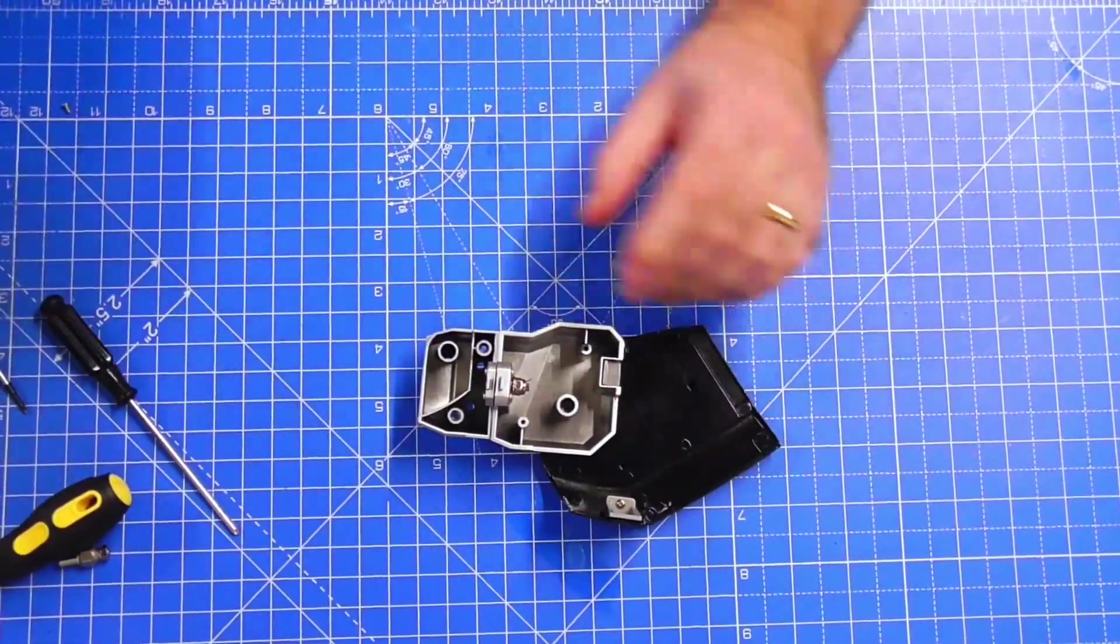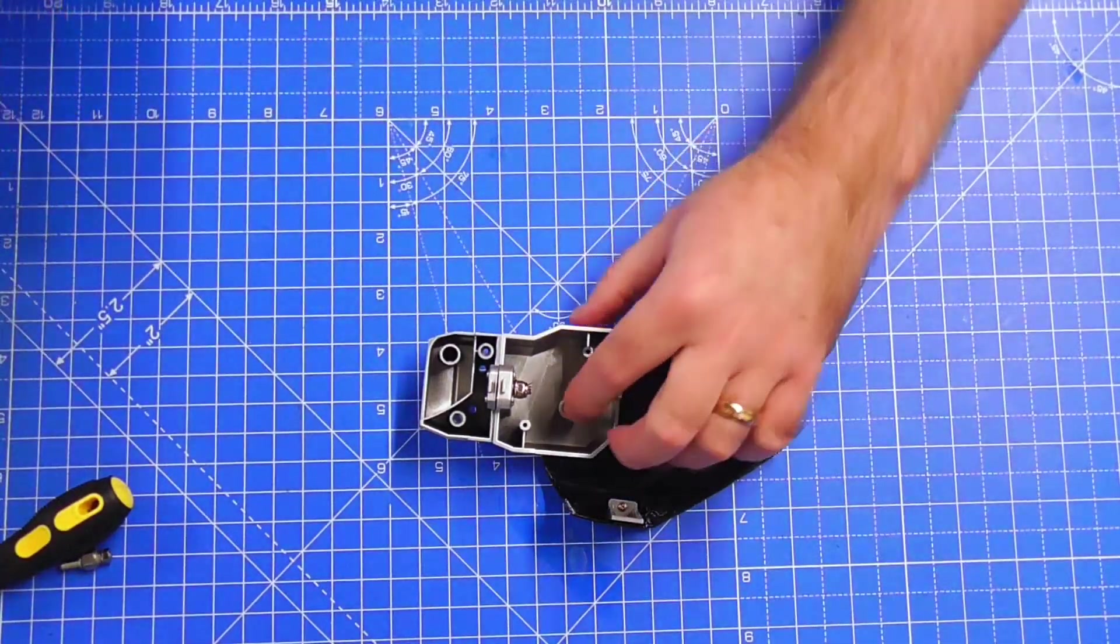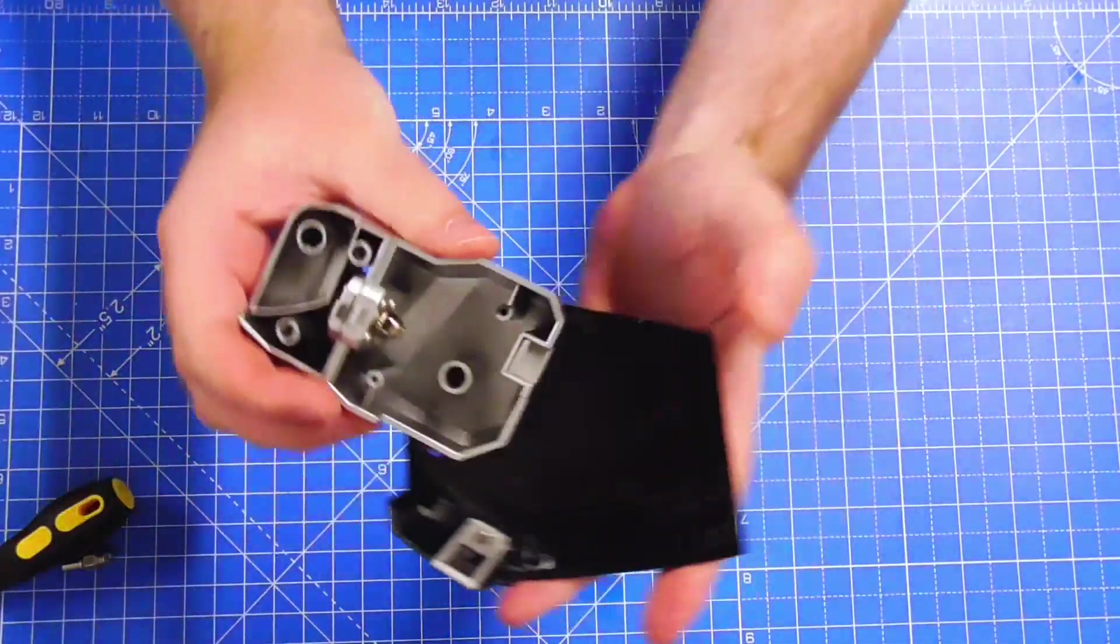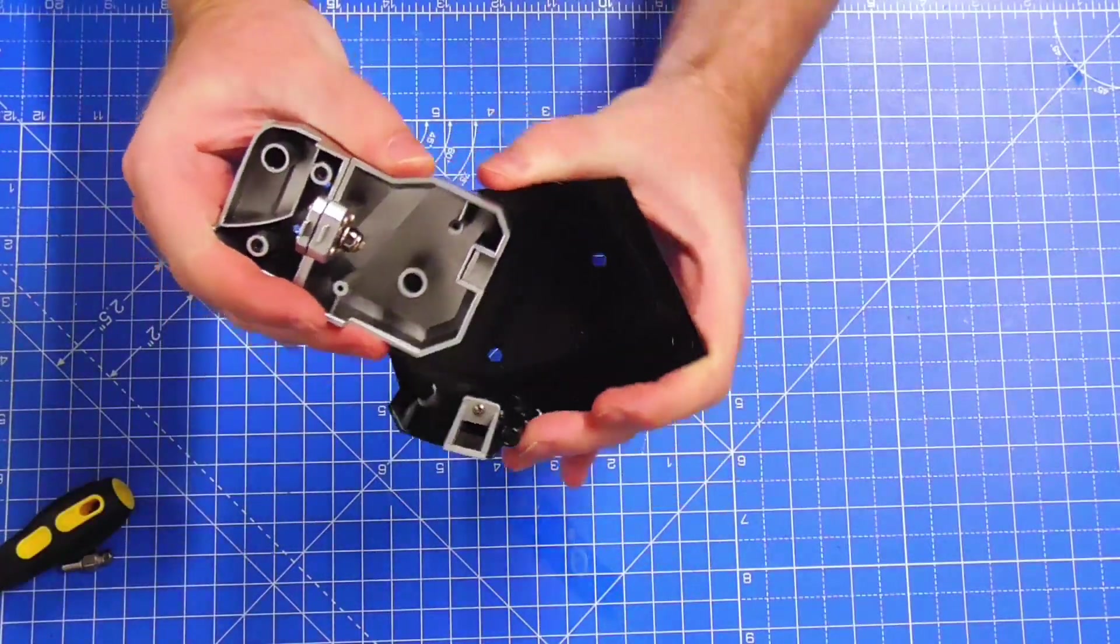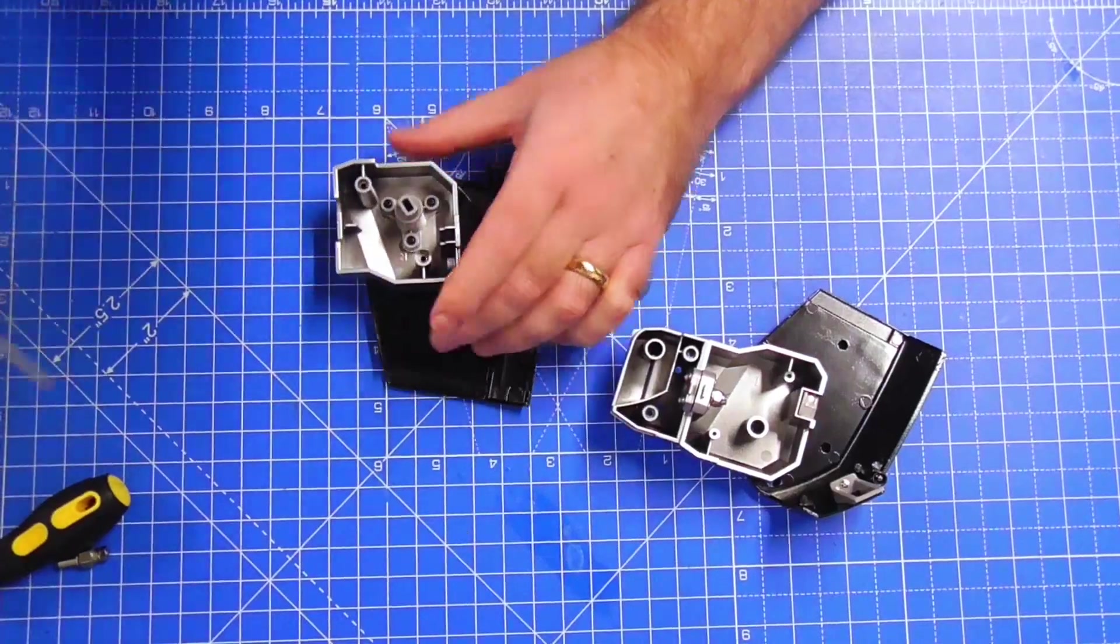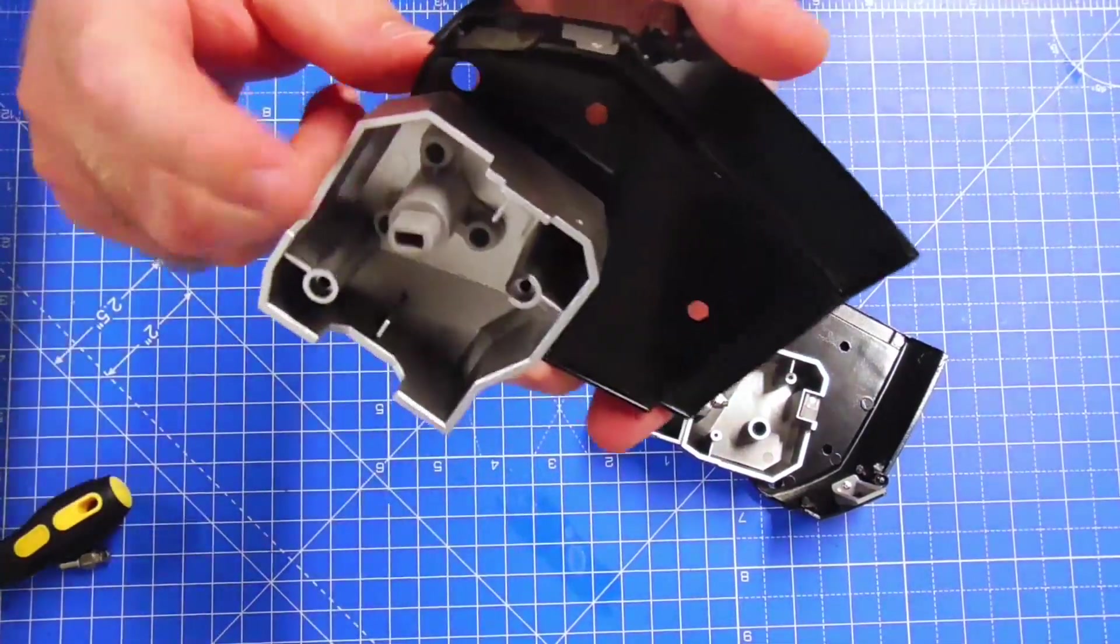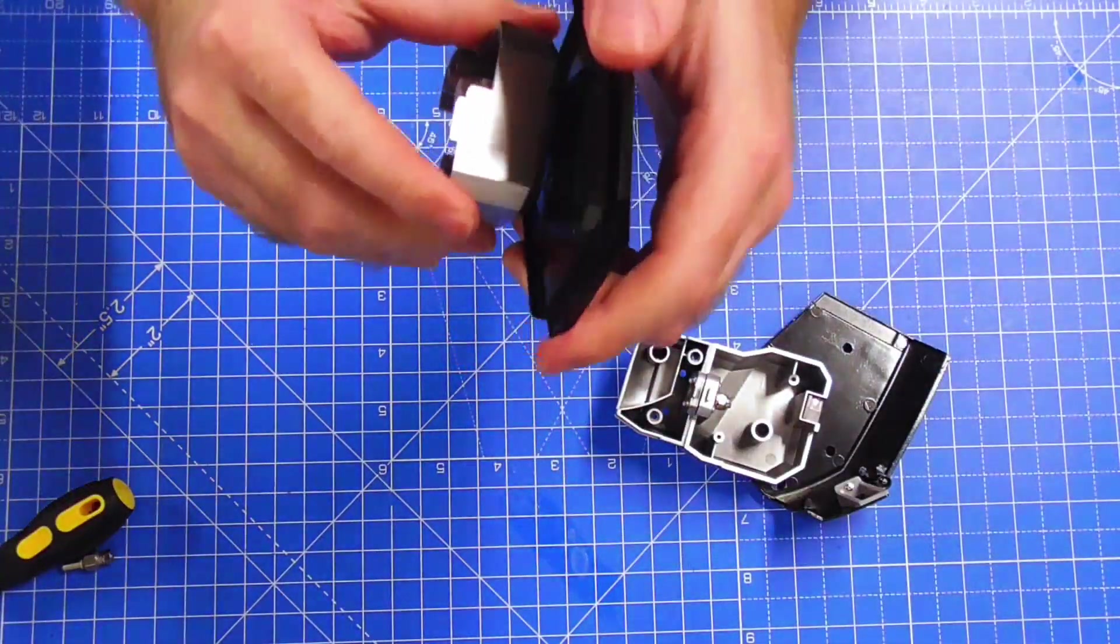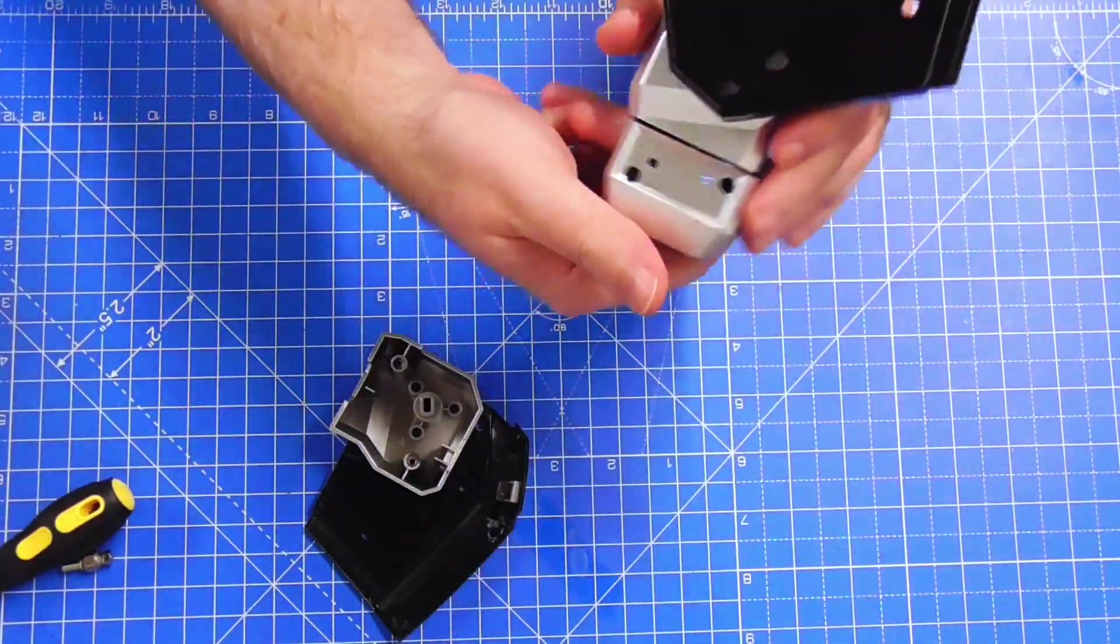And there we go all done. And the eagle-eyed amongst you would have noticed that I've actually tightened up this joint as well because it was very loose and now it's a lot tighter. In fact let me just do the same for, oh no I've already done this one because I had to take apart those three pegs there and that is actually tighter as well.